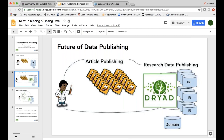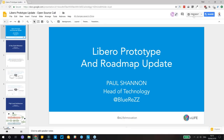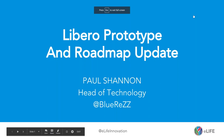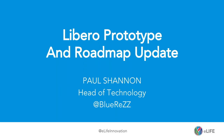We now switch to Paul Shannon from eLife, who will talk about Libro. Paul is Head of Technology at eLife. His team has been working on Libro, which is an evolution of the platform that powers eLife the journal. Libro is an open source platform of services and applications to help publishers do more with everything they publish. It's completely open source under the MIT license and built by the community. With Libro, they've made a specific effort to be more community driven.